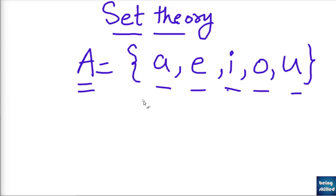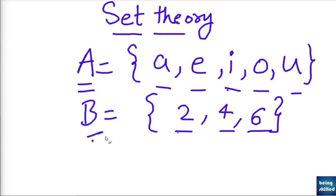So just to say it again, A is the set of the vowels which are there in English language. Let's say we are having another set B which contains values 2, 4, 6. So we can say that B is the set of even numbers which starts from 2 and ends at 6.